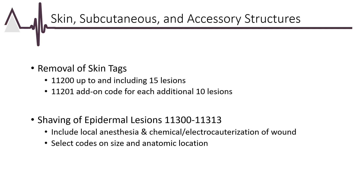A skin tag is a small, flesh-colored, benign skin growth that normally begins to appear on adults. They tend to be on the eyelids, neck, and armpits. Removal may be done by any sharp method, ligature, strangulation, electrosurgical destruction, or any combination thereof. Epidermal lesions may be removed by shaving or horizontal slice. These wounds do not require suture closures and are billed based on the anatomical location and size.